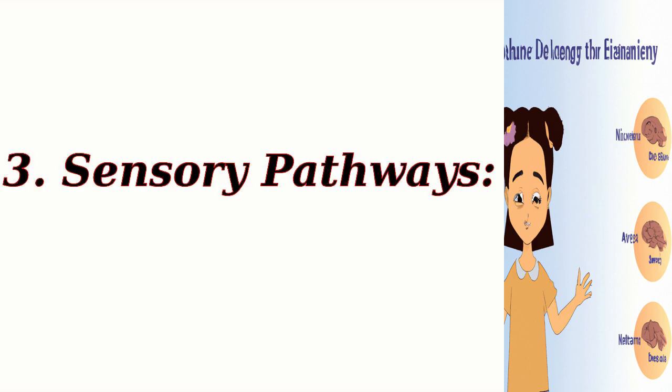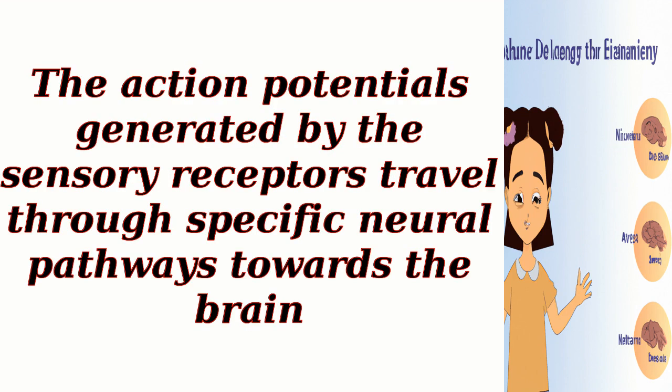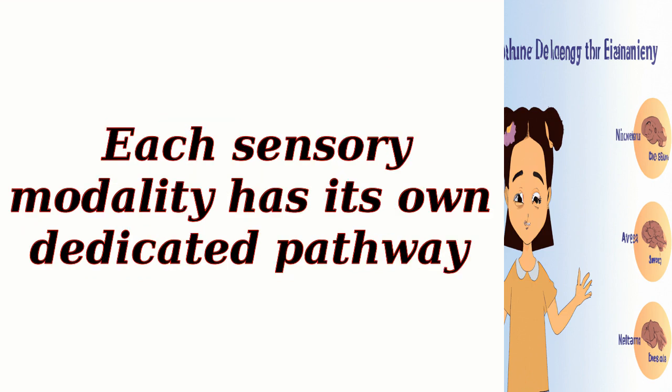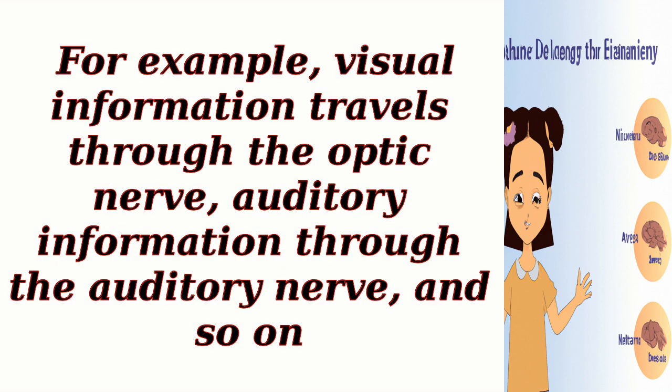3. Sensory Pathways. The action potentials generated by the sensory receptors travel through specific neural pathways towards the brain. Each sensory modality has its own dedicated pathway. For example, visual information travels through the optic nerve, auditory information through the auditory nerve, and so on.